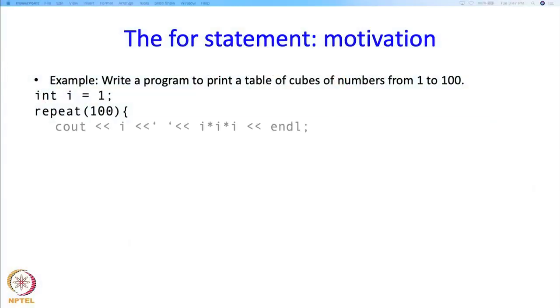So what would you do? For example, you would write int i equal to 1, repeat 100 times, cout i then i times i times i and endl with a space in between. And of course then you would have to increment i. So that would be the program fragment which will do what we want.